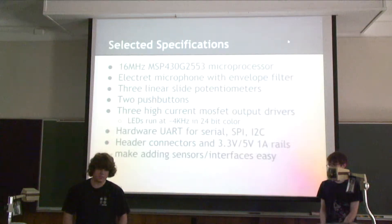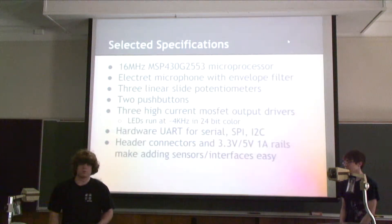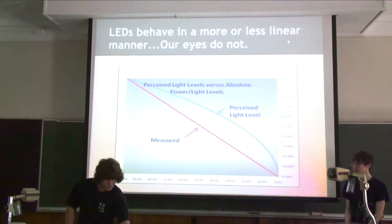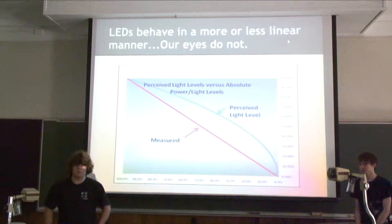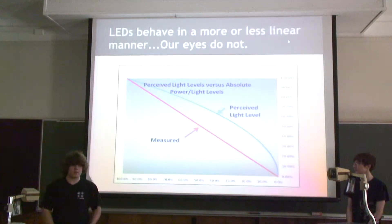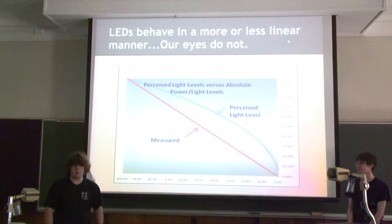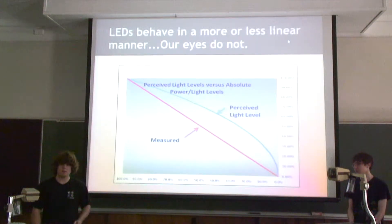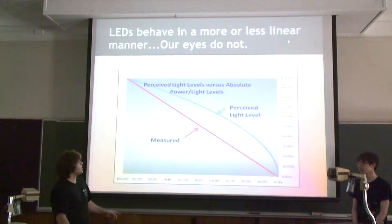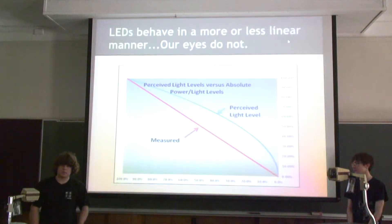It has a hardware interface for serial SPI or I2C so you can interface multiple boards together for synchronized panels, control them from your computer, or create a larger display. LEDs behave in a more or less linear manner when you change the duty cycle of a PWM signal driving them — but our eyes don't. If you drive an LED with an 8-bit PWM, you can go from 0% to 100% in 256 linear steps, but our eyes will see very large steps when it's dim and very small steps when it's bright.